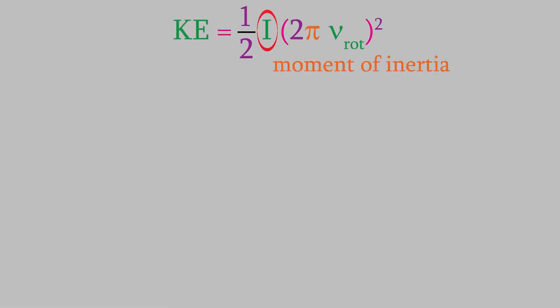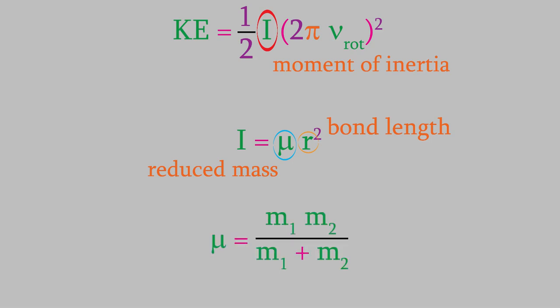Meanwhile, I is the moment of inertia, which is a measure of how difficult it is to cause an object to rotate. It's equal to mu times r squared. The r here is equal to the distance between the two atoms. And mu is called the reduced mass, which is given by this expression. In this equation, m1 and m2 are the masses of the two atoms.